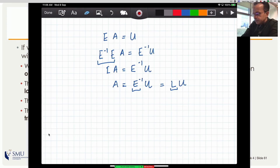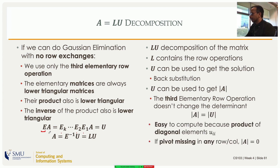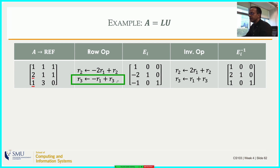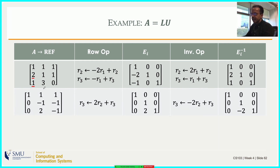A lower triangular matrix looks like a matrix with zeros above the diagonal. U can also be used to get the determinant because the third elementary row operation does not change the determinant, and the determinant of U is easy — it's just the product of the diagonal elements. For the worked example: starting with A, I kill the sub-diagonal entries. The second row becomes minus 2·R1 plus R2, and the third row becomes minus R1 plus R3. I can read off the elementary matrix directly: one on the diagonal, minus two and minus one in the first column. The inverse just changes those signs to plus two and plus one.